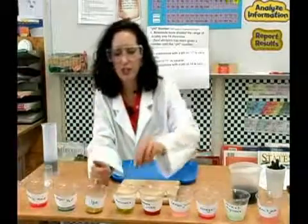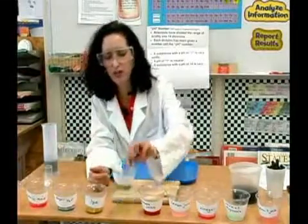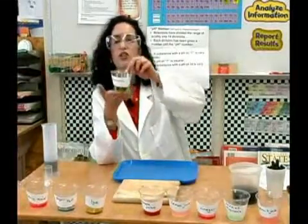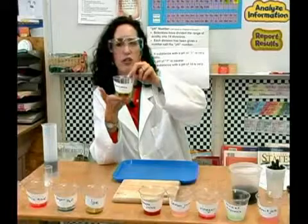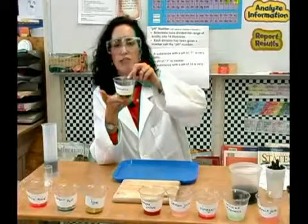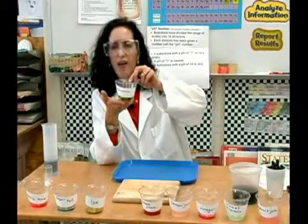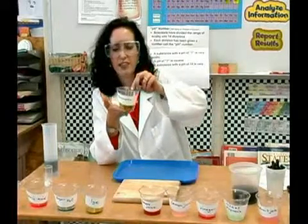Let's go ahead and let's look at ammonia. Surprising — it's yellowish-green. It means it's very basic. It does not have a lot of acid in it.